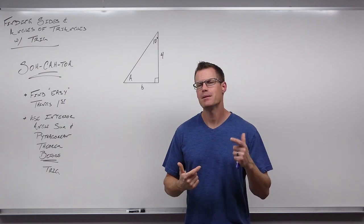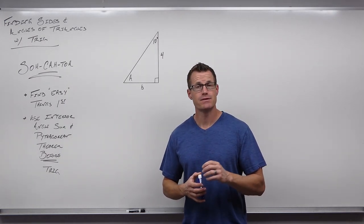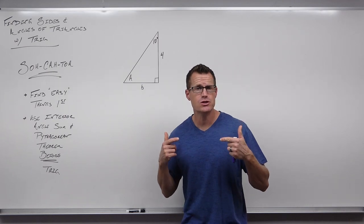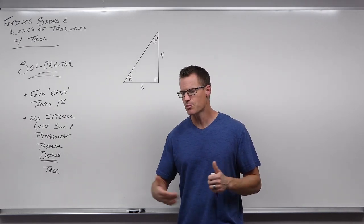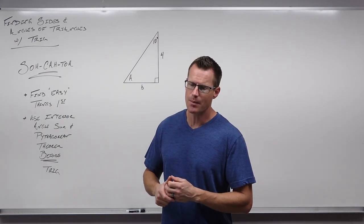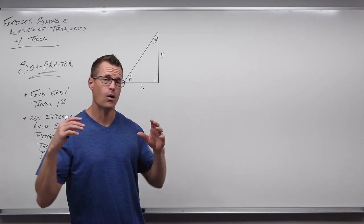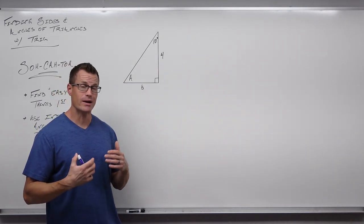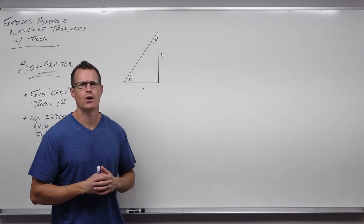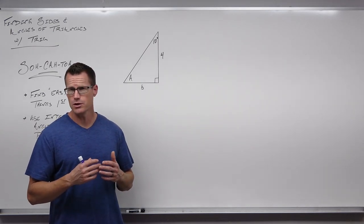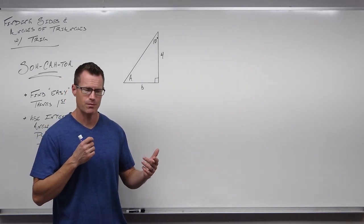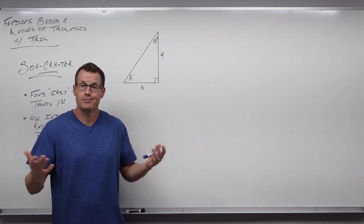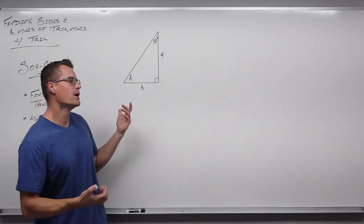Sometimes it's not easier, but it at least gives us an exact answer rather than the approximations we normally get with trig. So we're going to jump right into it. I'm going to lead you through how I pretty much always solve a right triangle — how I label the sides, how I identify what's going on. We're only going to do four examples.